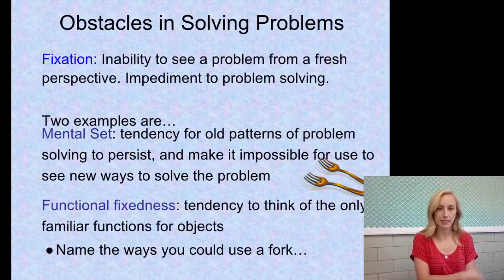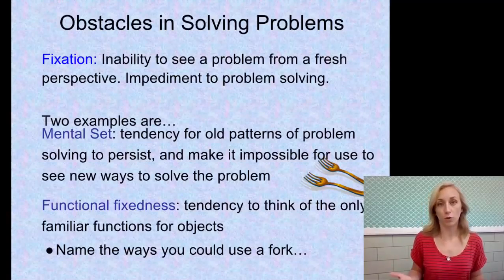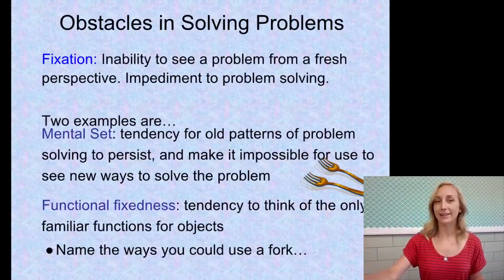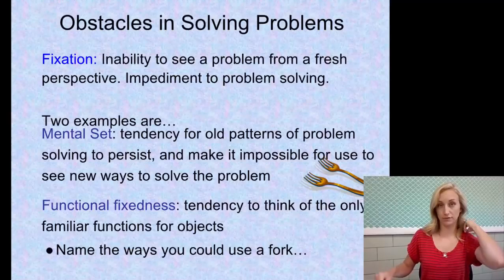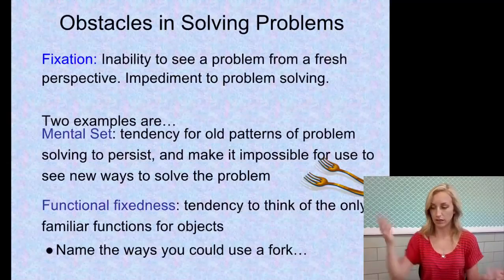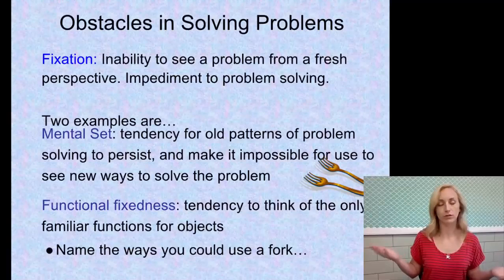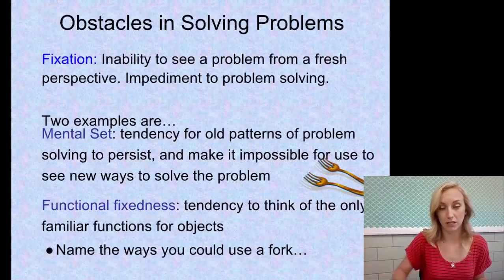The other form of fixation is functional fixedness — the tendency to think only of the familiar functions for objects. Ariel in The Little Mermaid uses a fork to brush her hair, so she does not suffer from functional fixedness. Someone who does might be looking for their keys and have only a paper clip in their pocket, but if they succumb to functional fixedness they won't realize they could pick the lock with it, because a paper clip is 'only for paper clipping.' So they can't solve their problem of unlocking the door.